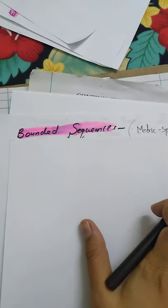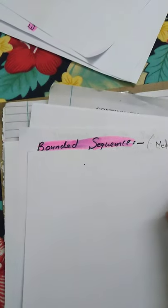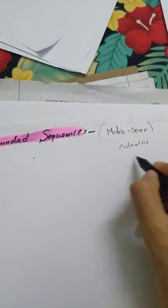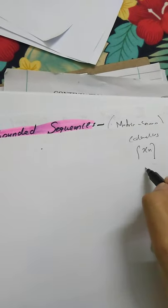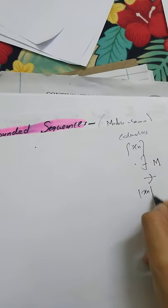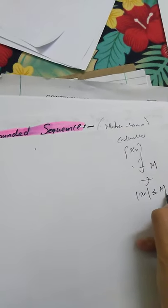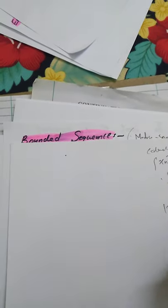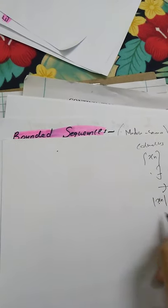Bounded sequence in a metric space. So a sequence - in this first calculus we have done this - that if a sequence is xn, then it will be bounded if there will be a positive constant m such that |xn| is less than or equal to m. So then we say that xn is what? xn is a bounded sequence.